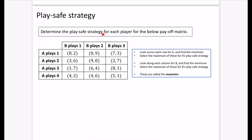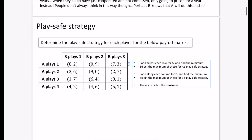We're going to determine the play safe strategy for each player using the payoff matrix. Each number refers to A first, then B, following the order of the headings. For A, we look across each row and find the minimum — the worst thing that could happen in each row. In the first row we have 8, 0, and 7, so the minimum is 0. In the following rows the minimums are 2, 1, and 4 respectively.